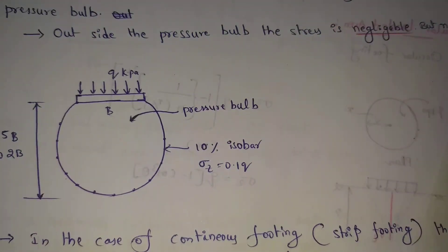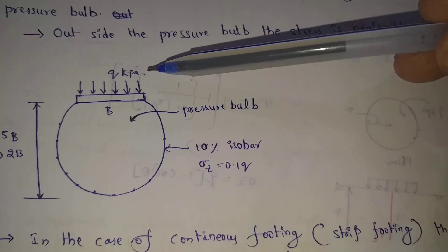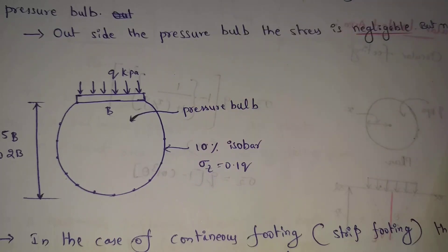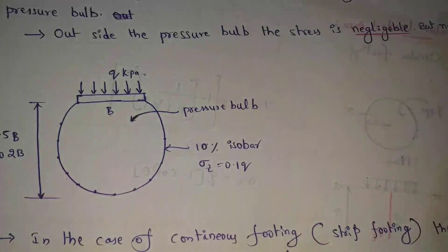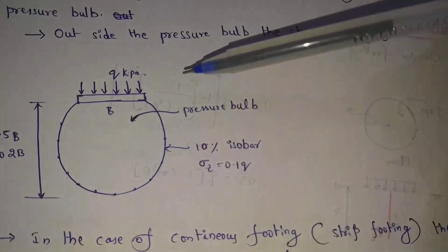Length direction will increase. In the width direction, Q is the load. Pressure ball is the act. This is pressure ball.